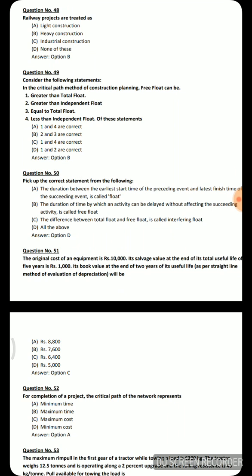Next question: in the critical path method of construction planning, free float can be — statement 1: greater than total float; statement 2: greater than independent float; statement 3: equal to total float; statement 4: less than independent float. Statements 2 and 3 are correct, so option B is the correct answer.